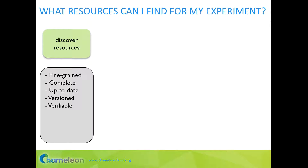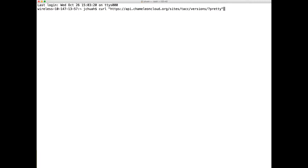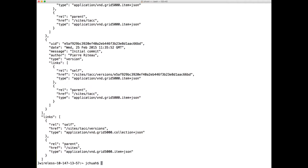We ensure descriptions are up-to-date using semi-automated node discovery. When a node is added or updated, a script can automatically collect information about its components. This prevents human errors and ensures information is made available to both users and the resource manager immediately. Each modification of a component causes a new version of the Chameleon testbed to be generated, so if you ran an experiment six months ago, you can retrieve the state of the testbed as it was then. You can access versioning via a REST API web service.